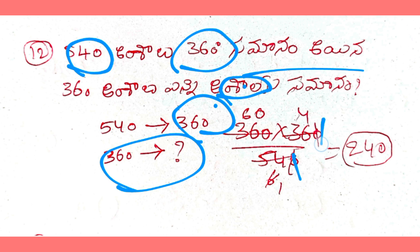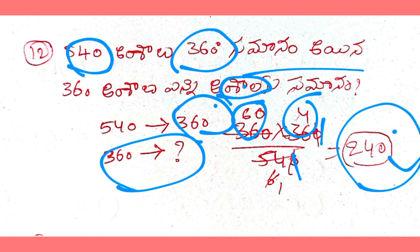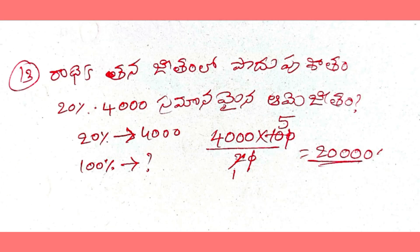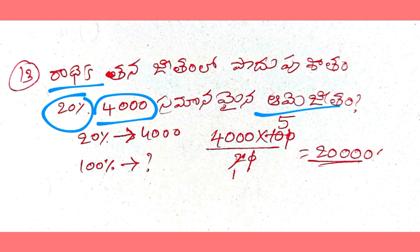After canceling zeros, using the 6 table and 9 table: 9 times 6 is 54, and 9 times 4 is 36. Then 60 into 4 multiplied gives 24. Further steps yield 3 times 54 equals 10 and 54. Finally, 20% is equal to 45.